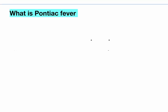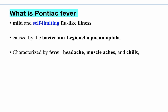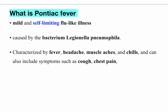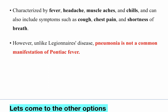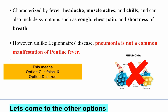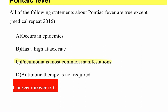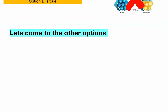Pontiac fever is a mild, self-limiting flu-like illness — no antibiotics required because it resolves on its own. Caused by the same bacteria, Legionella pneumophila, it is characterized by fever, headache, muscle aches, and chills. It can cause cough, chest pain, and shortness of breath, but unlike Legionnaire's disease, pneumonia is not a common manifestation — that's the key differentiator. Antibiotic therapy is therefore not required.